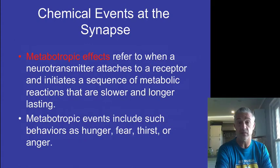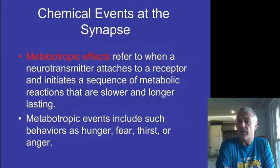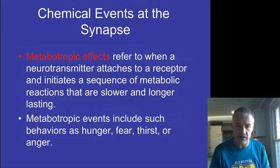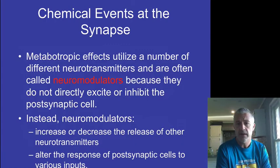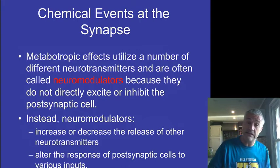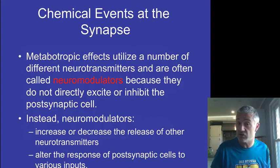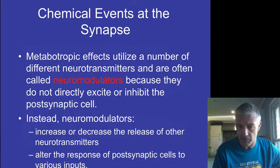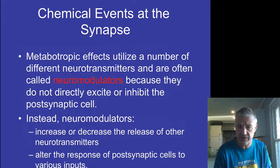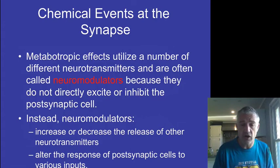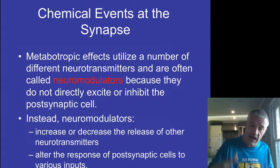Metabotropic effects are ones where the neurotransmitter binds to a receptor and changes something about the metabolism of the receiving cell, bringing about a longer lasting effect. Some of the events like hunger, fear, thirst, and anger are definitely ones there. A lot of times we refer to these neurotransmitters as neuromodulators because they're not directly exciting or inhibiting something, but just bring about a change in that postsynaptic cell. Something like caffeine would be a good example of a neuromodulator. They can increase or decrease the release or the clearance of a neurotransmitter and definitely alter the effects on that postsynaptic cell.